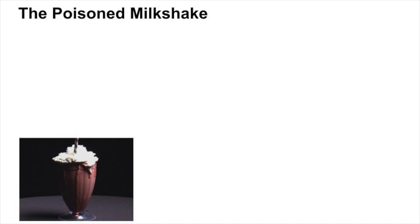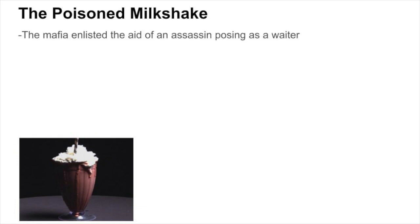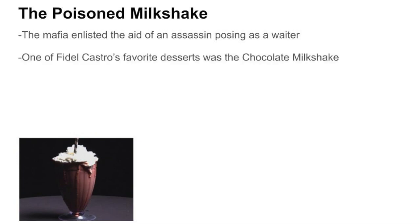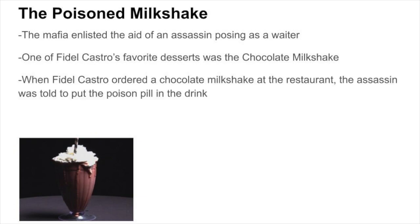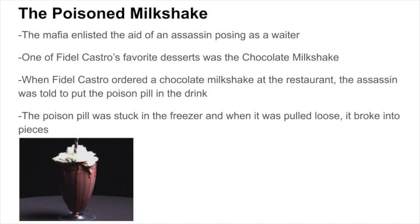In their closest assassination attempt, the mafia enlisted the help of an assassin posing as a waiter. One of Fidel Castro's favorite desserts was the chocolate milkshake. When Castro ordered a chocolate milkshake at the restaurant, the assassin was told to put the poison pill in the drink. However, when the assassin went to retrieve the poison pill, he realized it had gotten stuck in the freezer. When the assassin tried to pull it loose, he accidentally ripped the pill and ruined the plan.